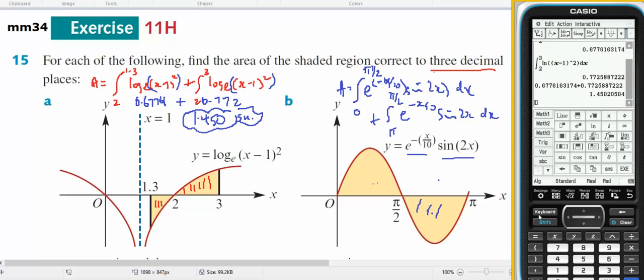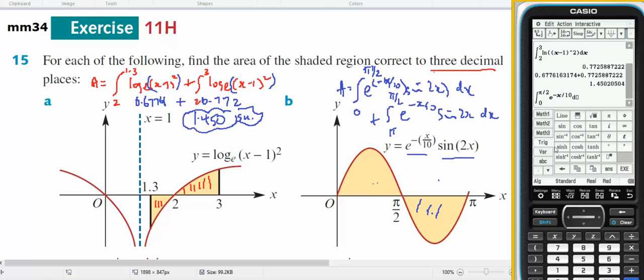Doing it in main first, I'm going to bring up my keyboard in math 2, the integral from 0 to pi on 2 of e to the power of minus x divided by 10 times trig. Sin 2x, make sure you're in radians, dx. And that gives me that answer, which is that.